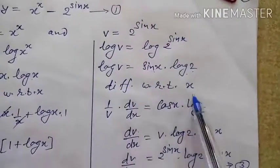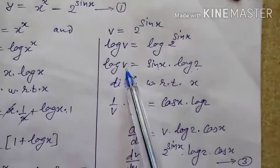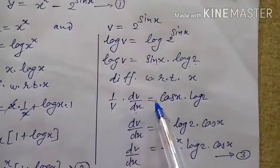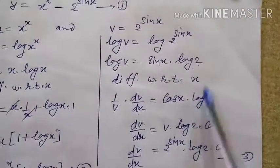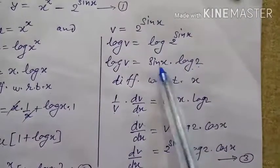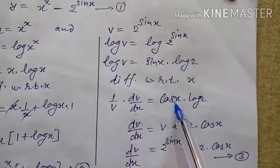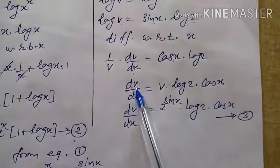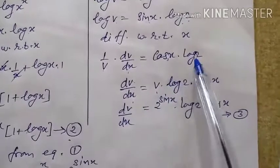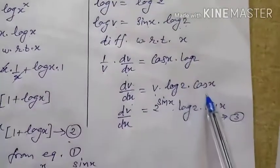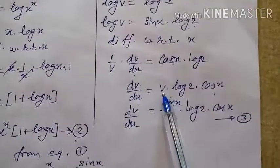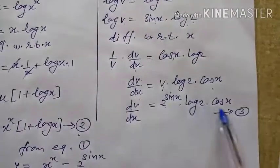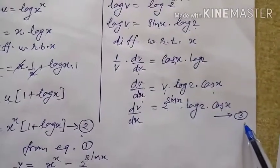Differentiating with respect to x: the differential of log v is (1/v) · dv/dx. Log 2 remains as-is since it is constant, and the differential of sin x is cos x. Transferring v to the right side: dv/dx = v · log 2 · cos x. In the last step, replace v with 2^(sin x). So dv/dx = 2^(sin x) · log 2 · cos x. Give this equation number 3.